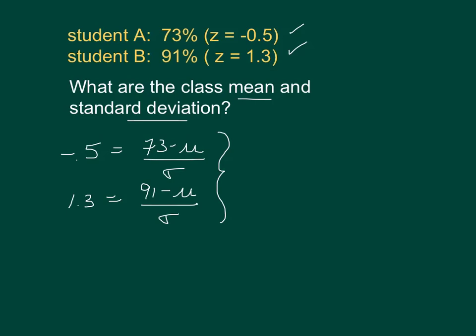I'm going to write the first equation a little bit differently by multiplying both sides by sigma, and I get this equation. Then I'll take the second equation and do the same thing, multiply by sigma, and I have that equation. Now I'm going to add these equations to get something to cancel out. I think I'm going to multiply this first equation by negative 1 and then add.